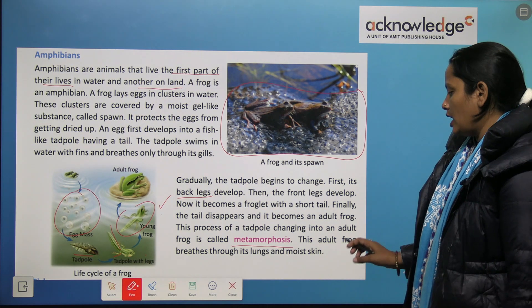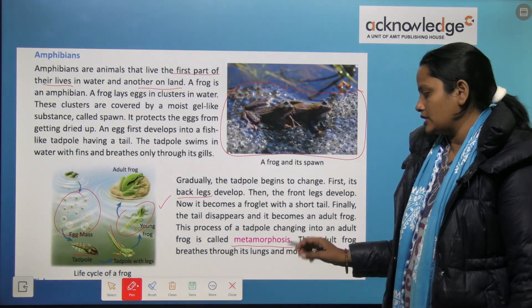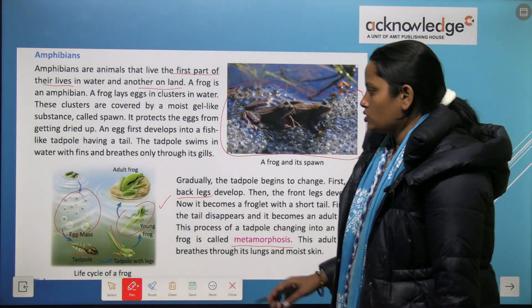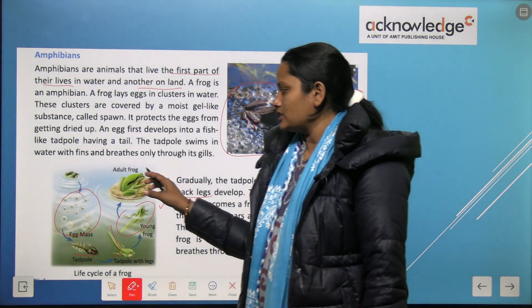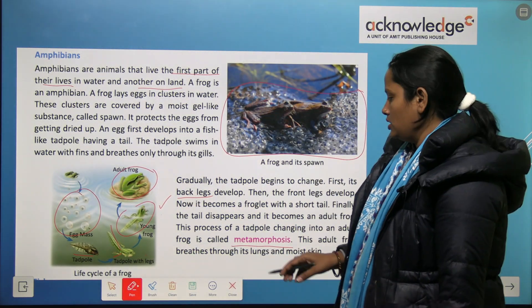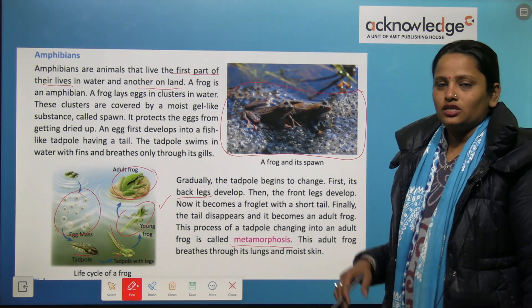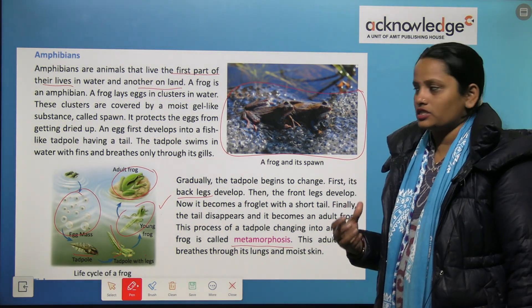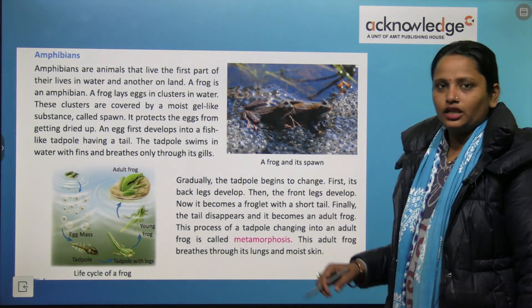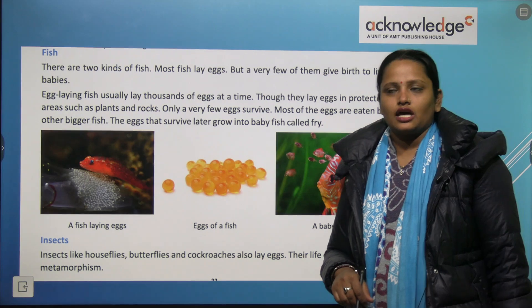This adult frog breathes through its lungs and moist skin. When they are small and in water, they breathe through their gills.